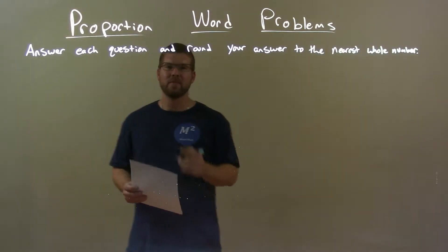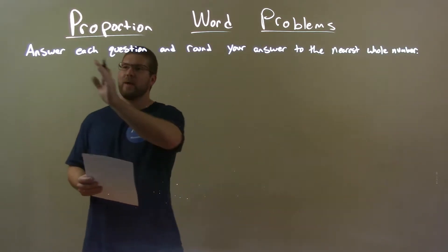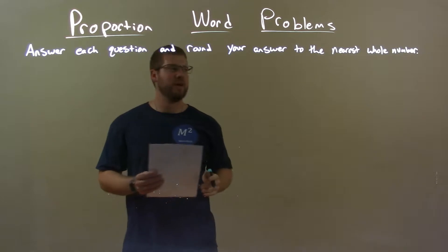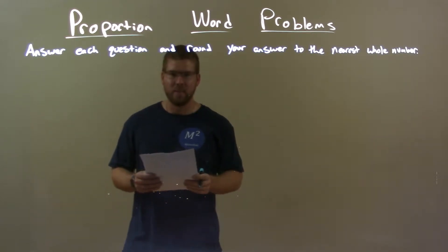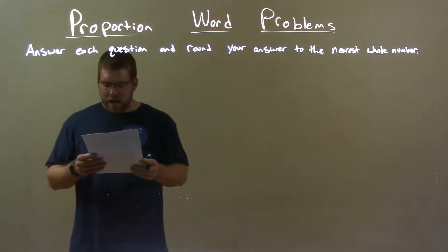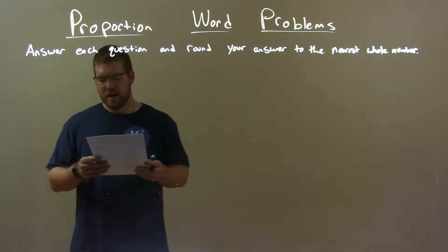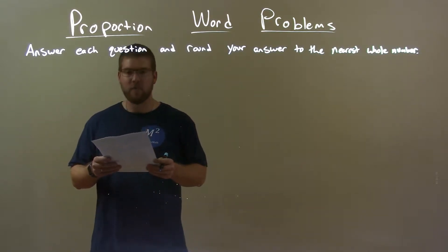Hi, I'm Sean Gannon, and this is MinuteMath, and today we're learning about proportion word problems. We're going to answer each question and round your answer to the nearest whole number. If I was given this problem, Jasmine bought 32 kiwi fruit for $16. How many kiwi can Lisa buy if she has $4?